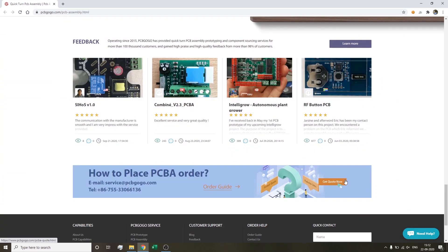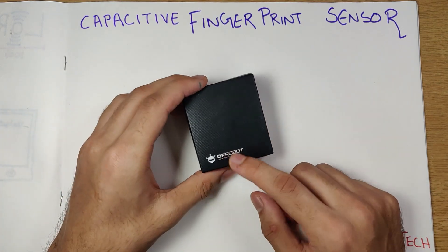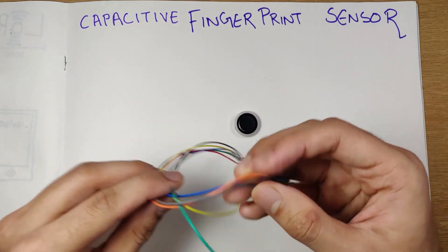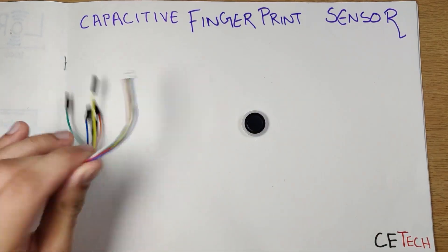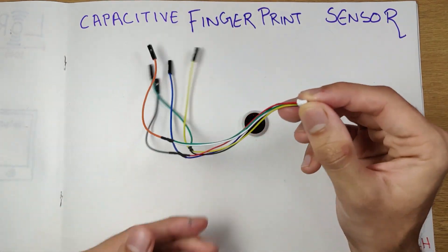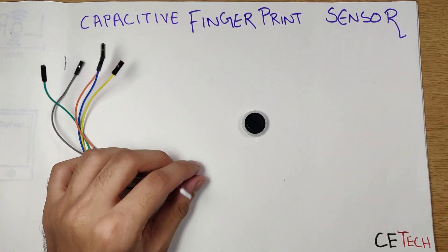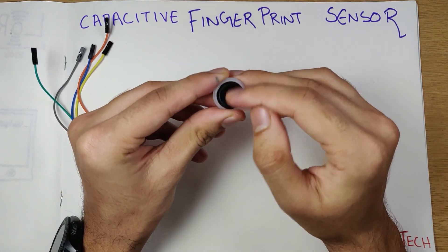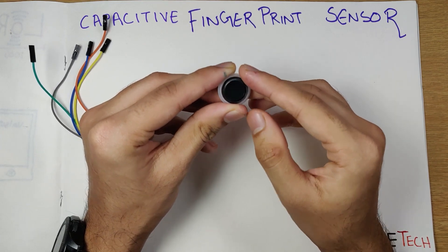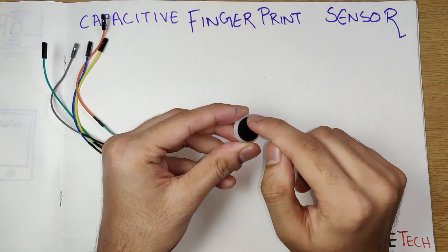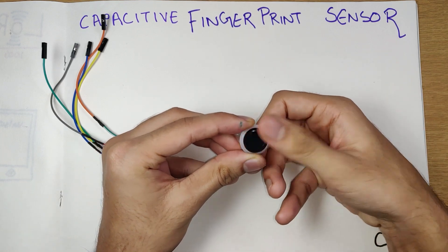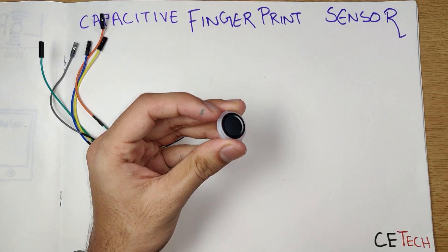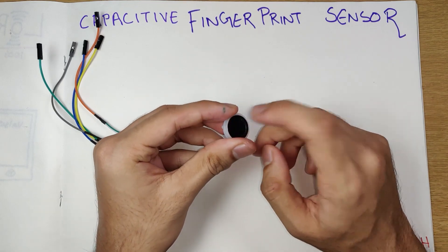So first things first, taking a look at the fingerprint scanner which comes from DF Robot. It comes in a cute small packaging with the capacitive fingerprint sensor in an ESD bag. I've already opened it and attached some wires to the small pitch connector. This is pretty light, it's like 5mm thick by 1 centimeter diameter. It's a circular sensor with a good metallic ring outside which gives it good depth, and it's very easy to locate. It's kind of the same one which you have on the back of your smartphones for fingerprint scanner.